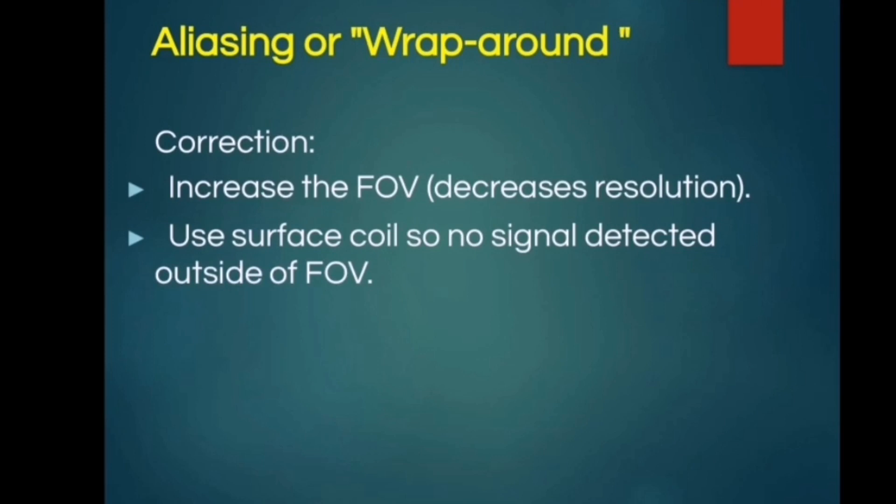We can remedy aliasing or wraparound artifact by increasing the FOV and the use of a surface coil so that no signal is detected outside the FOV.